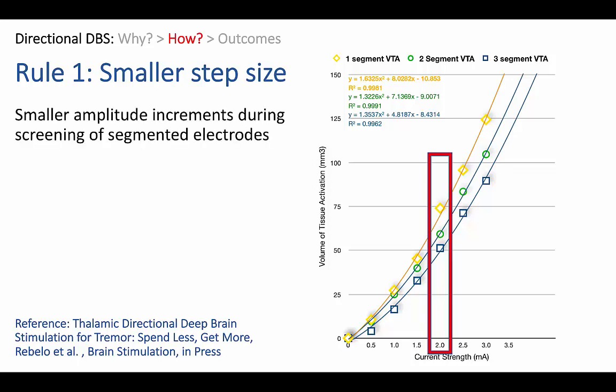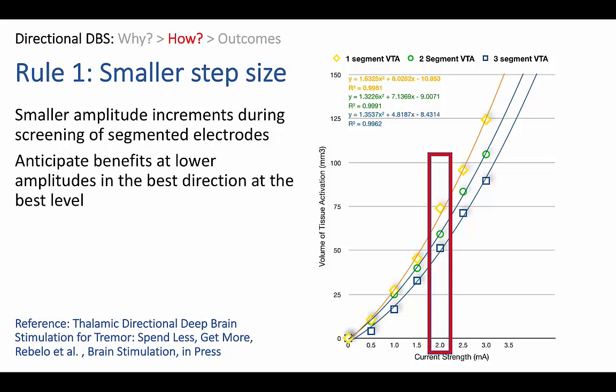This means that to study a single segment at the same resolution as you would study three segments, you need to increase amplitude in smaller steps while screening these segmented electrodes. Secondly, you need to anticipate benefits at a lower amplitude in the best direction and at the best level. You may see an unfamiliarly low number — say 0.75 milliamps — and it is tempting to leave stimulation at a number you're more familiar with, say 2 milliamps, but you need to anticipate that these benefits may occur earlier in these smaller segmented contacts because they can be more efficient at activating neural tissue and because you're spending the power in the right place.